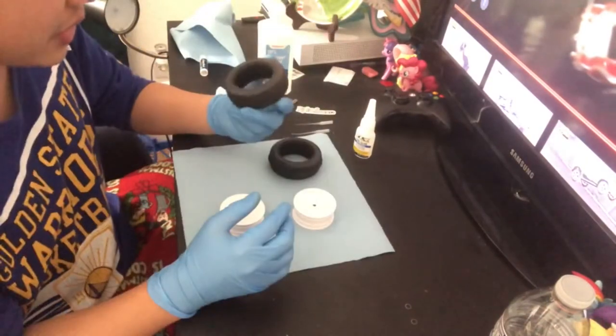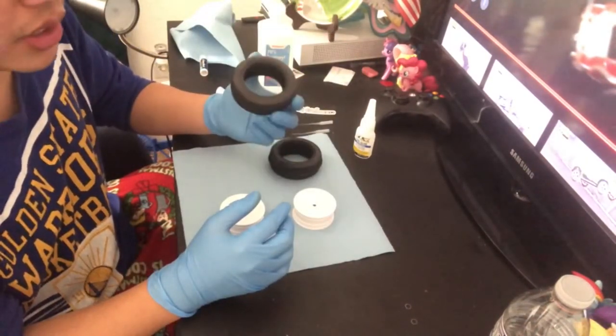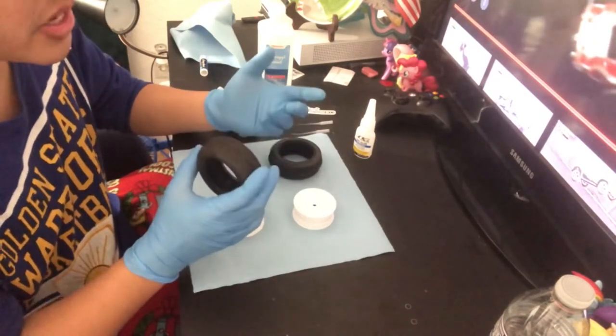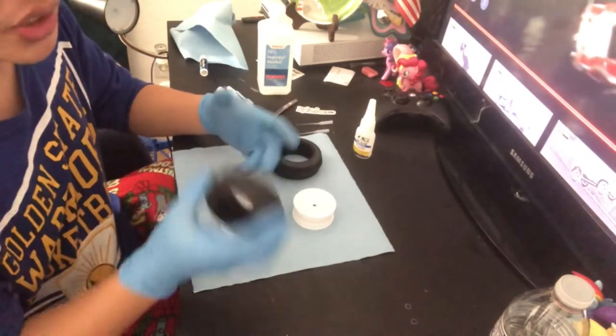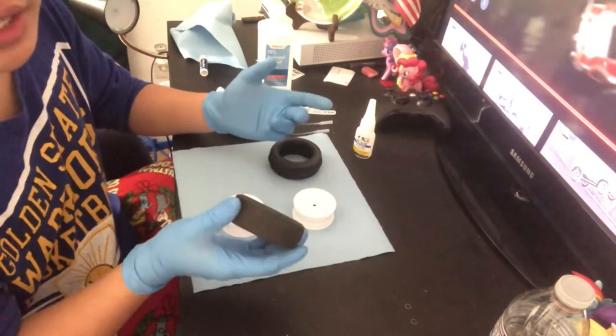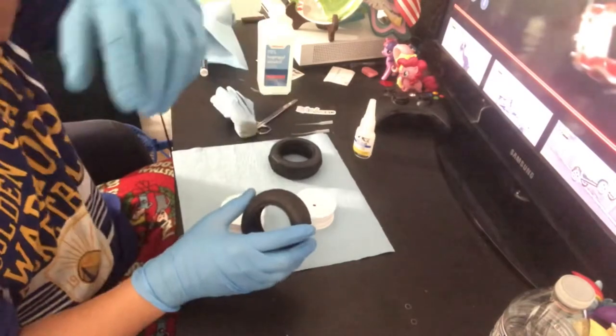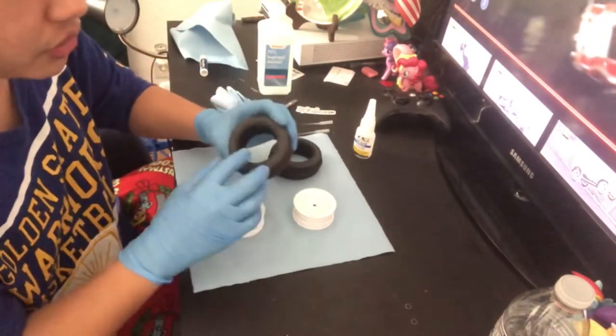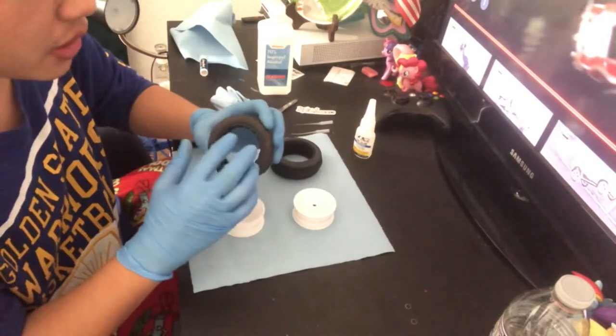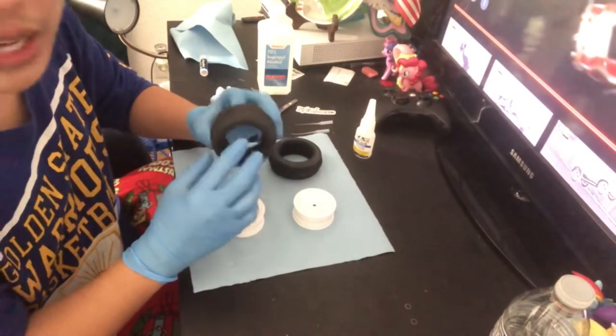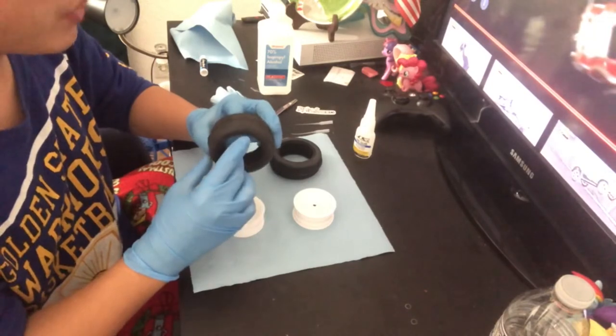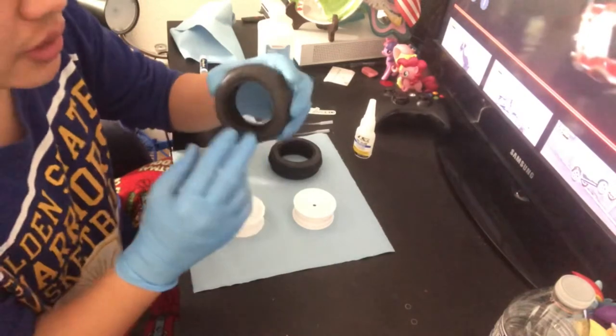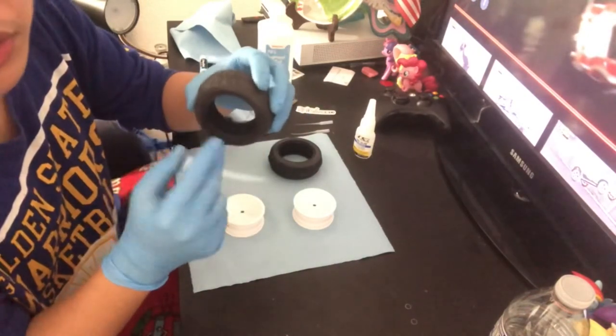If you guys own an RC short course truck like the Traxxas Slash, the HPI Blitz, Associated SC10, or pretty much any RC short course trucks, usually in those applications they have a staggered bead setup. Basically, the outer bead is usually smaller.